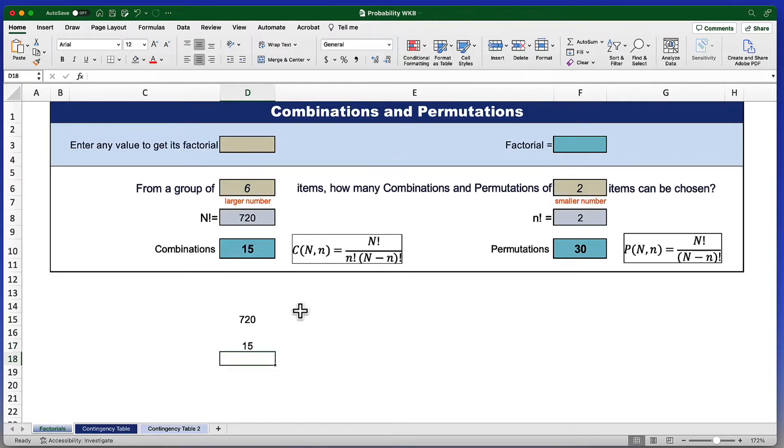Click, and there's my combination for 15. The permutations use a very similar formula, equal sign, PERMUT, open parentheses,